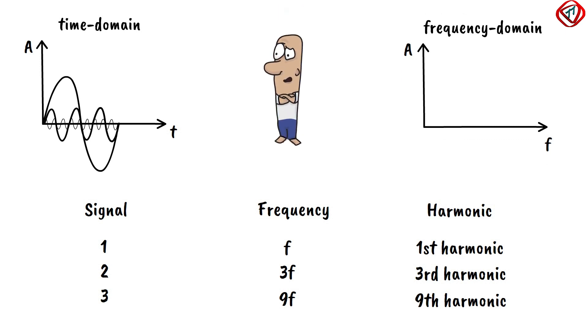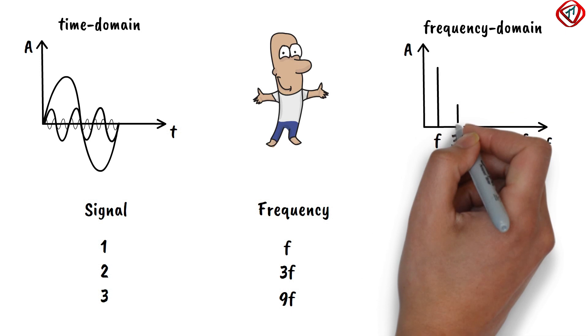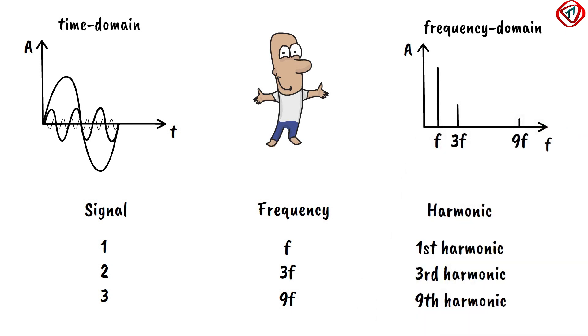Understanding this composite signal in time domain is quite difficult, so we plot it in the frequency domain. Therefore, the frequency domain of a periodic composite signal is always made up of discrete spikes.